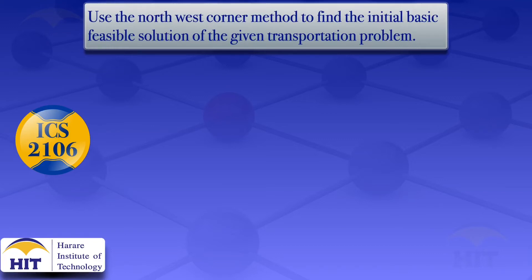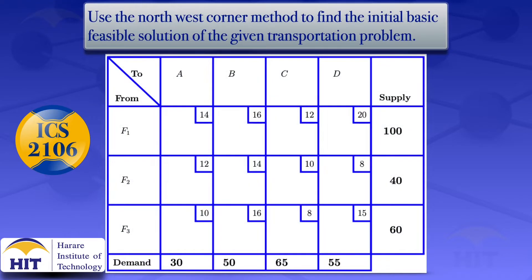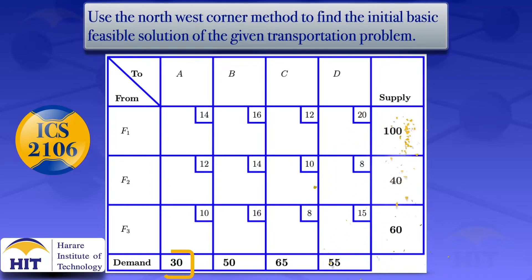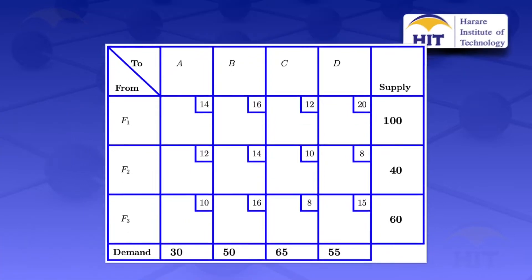In this tutorial I'm going to use the northwest corner method to find the initial basic feasible solution of the transportation problem that has three sources F1, F2, and F3, and four destinations A, B, C, and D. The small squares show the unit cost — for example, 14 is the cost of transporting one unit from F1 to destination A. The supply capacity for F1 is 100, and the numbers at the bottom are the demand requirements for each destination.